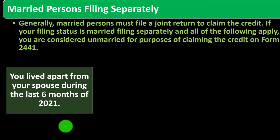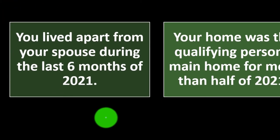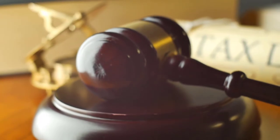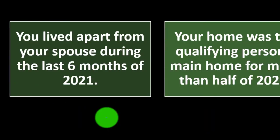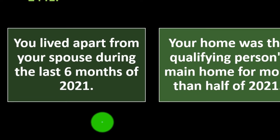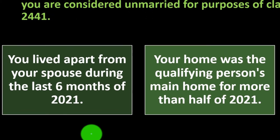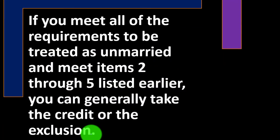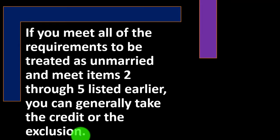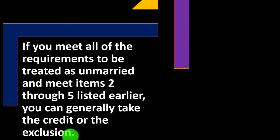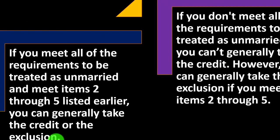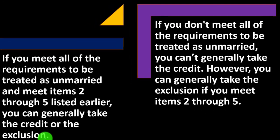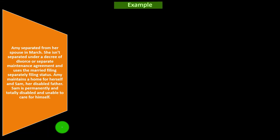To be treated as unmarried for this credit, the following must apply: you lived apart from your spouse during the last six months of 2021 — meaning you may be separated but not yet divorced or legally separated depending on state law; your home was the qualifying person's main home for more than half of 2021; and you paid more than half the cost of keeping up that home. If you meet all these requirements and items 2 through 5, you can generally take the credit or exclusion.